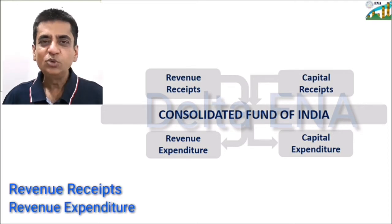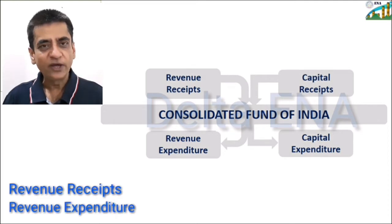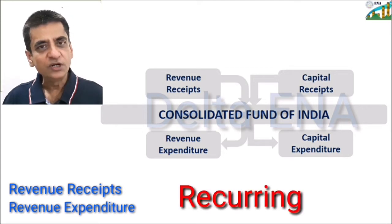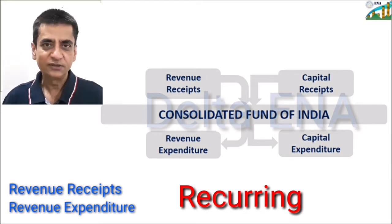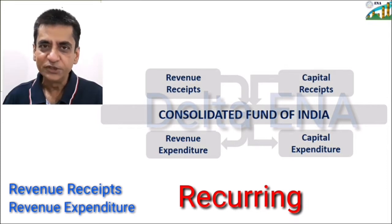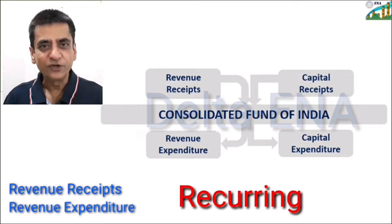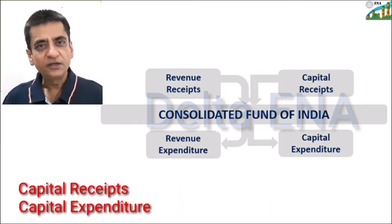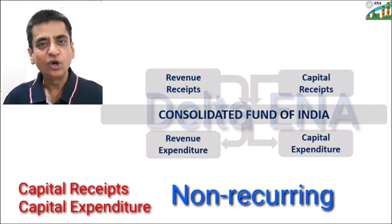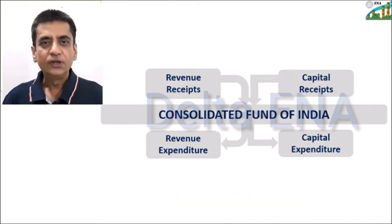When we say revenue receipts and revenue expenditure, we are talking about receipts or expenditure which are in the normal course of business and in day-to-day regular operations. They keep on recurring, like a grocery bill and electricity bill in a household budget, and salary or business income as recurring income. On the other hand, capital receipts and capital expenditure are non-recurring in nature. Let us now understand these terms in further detail.